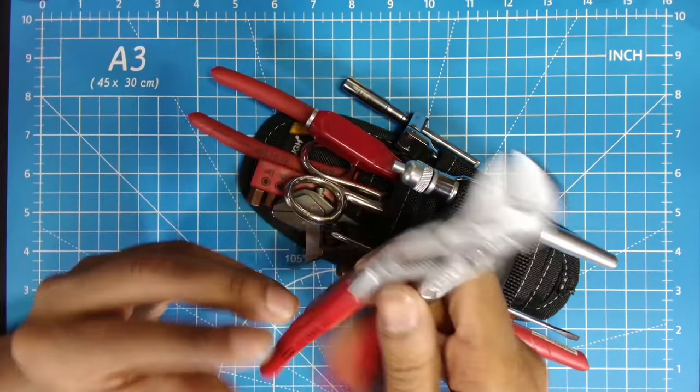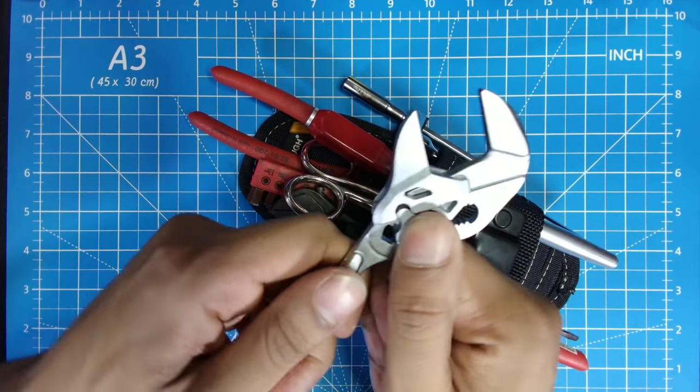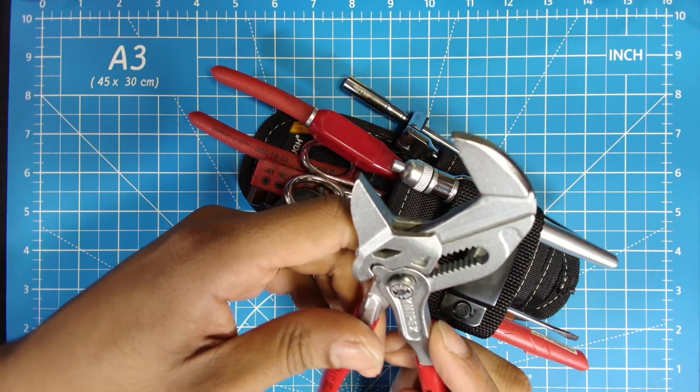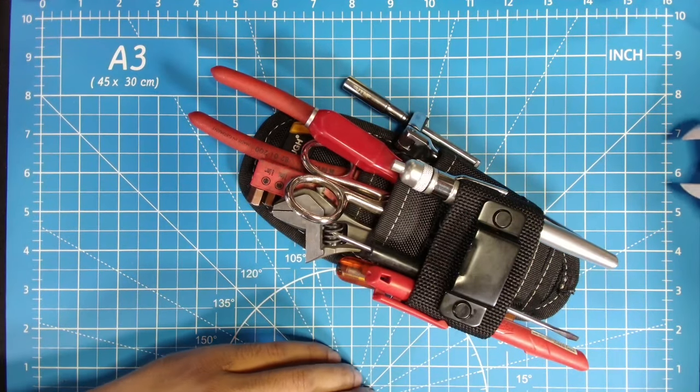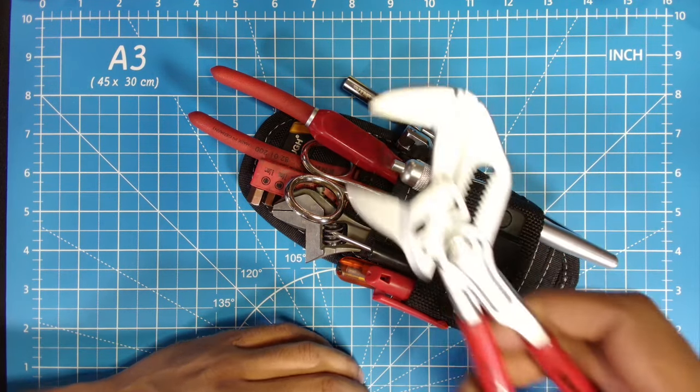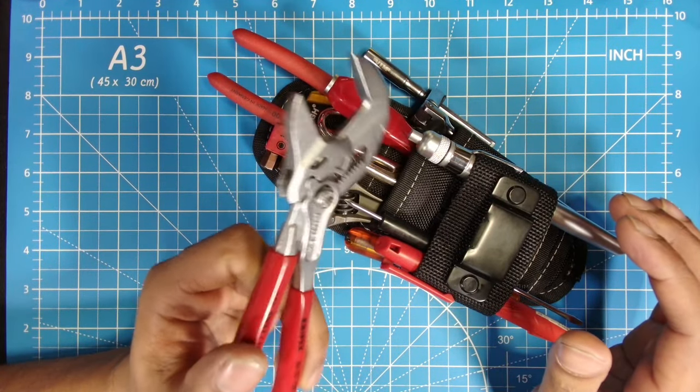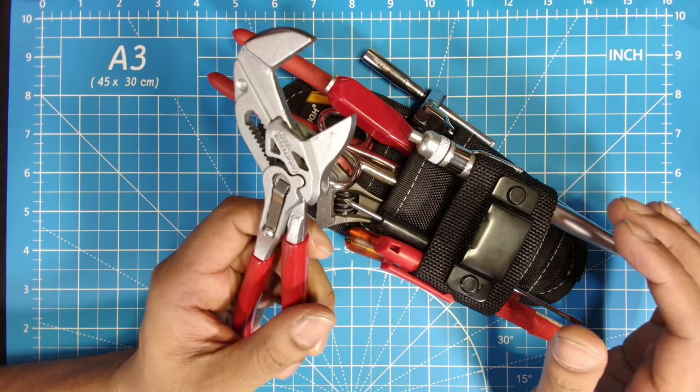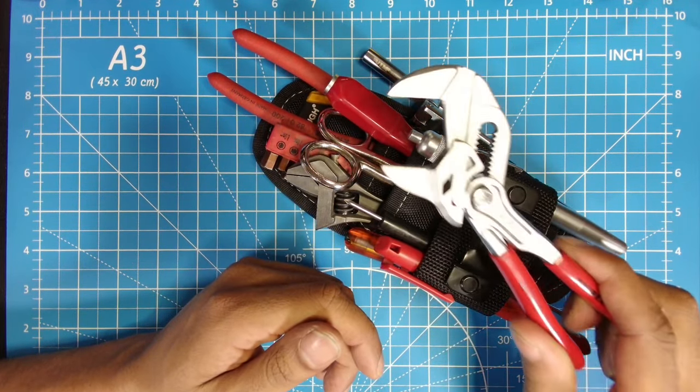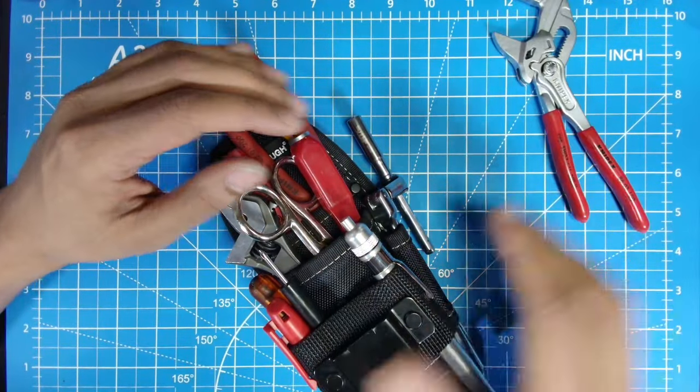This is my Knipex 150mm, also known as 6 inch pliers wrench, goes up to a little more than an inch. Good for plumbing fittings, good for small bolts, good for pneumatic fittings, shark bites, sensor bolts, a lot of uses from this tool. Very good quality pliers, I mean everybody knows Knipex makes very good quality tools.